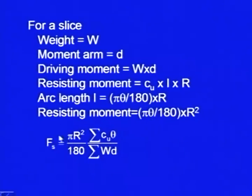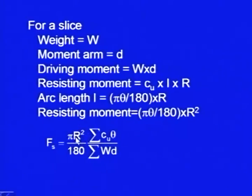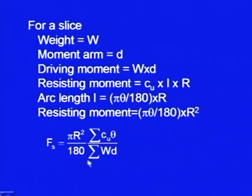Now it is very simple — the factor of safety will be equal to the total resisting moment for all slices. I make the sum of all of them: total resisting moment is π × r² × Σ(C_u × θ) / 180, because r is constant and π is also constant, so π·r² comes out of the sigma sign, and you are left with C_u × θ inside the summation. So here it will be π·r² × Σ(C_u × θ) / 180, divided by Σ(W × D) for the driving moment.